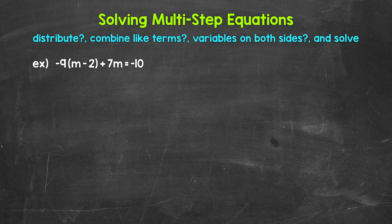We will start by looking to see if we need to use the distributive property. Then we can look to see if we can combine any like terms. And then if we end up having variables on both sides of the equation, we will need to take care of that — though for this example, we will not have variables on both sides. And then lastly, we can look to isolate the variable.